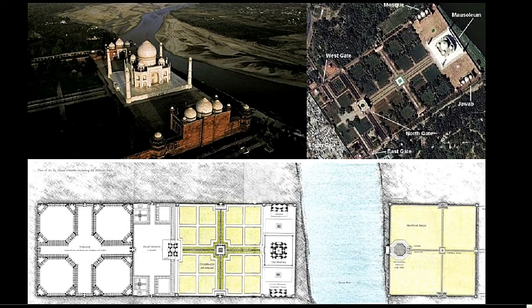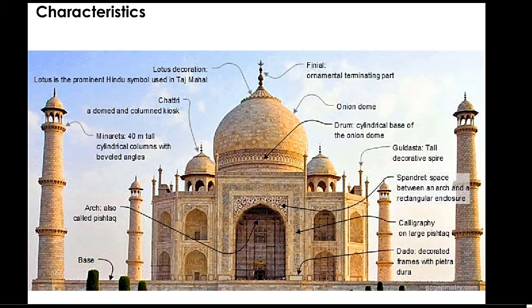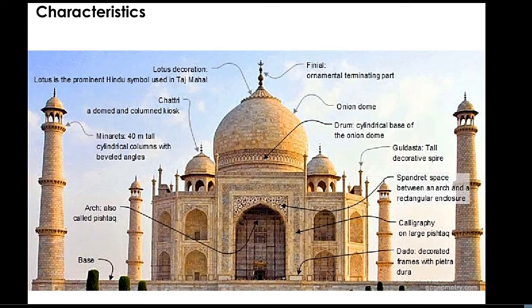Here is a typical mosque layout of the Taj Mahal in Agra, India. Characteristics of the Taj Mahal include: lotus decoration, finial, chattri, tas dome, onion dome, drum cylindrical base, spandrel, calligraphy on large pishtaq, dado decorated frames with pietra dura, as well as a pointed arch and a minaret.